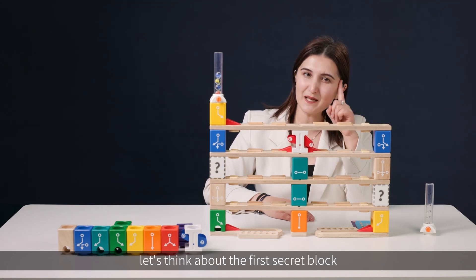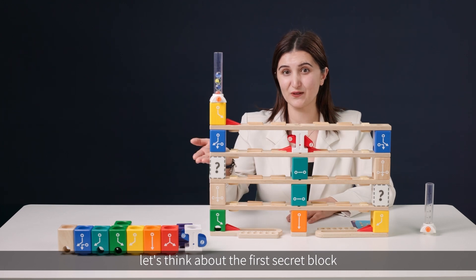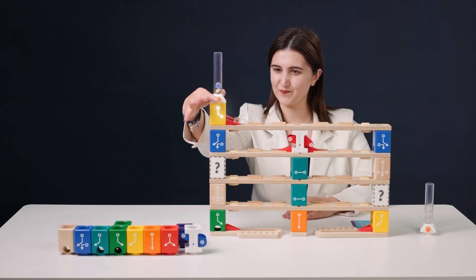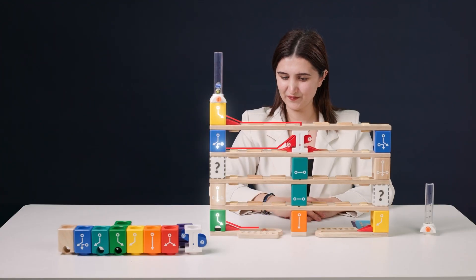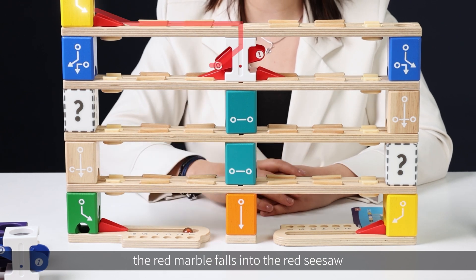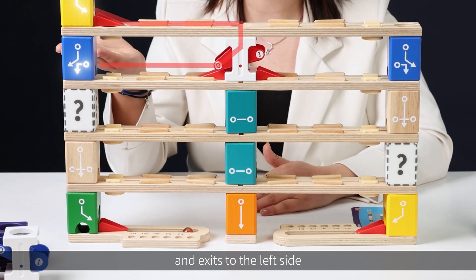Now, let's think about the first secret block. Let's launch the red marble first and see how that goes. As we can see, the red marble falls into the red seesaw and exits to the left side.